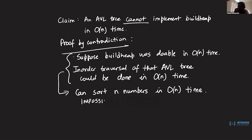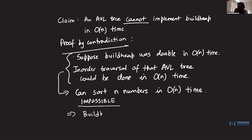That is a contradiction, since we know sorting a bunch of numbers using comparison-based sorting is impossible in better than O(n log n). We have reached a contradiction, which means our original claim is falsified: build heap cannot be done in O(n) time using an AVL tree.